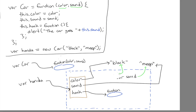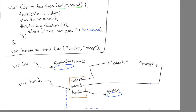So var color is going to go away, and so is var sound, and the scope itself will all disappear. Now notice how this object has not disappeared, because this variable honda is still pointing to it. So these arrows are kind of like life links — as long as something points to it, this will never disappear. So this is what it looks like whenever we create a new car.